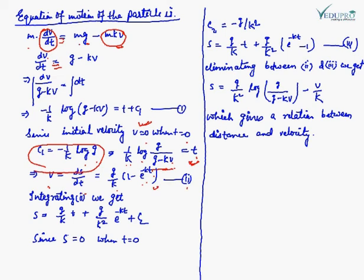Integrating dS = V dt gives S = (G/K)T + (G/K²) e^(−KT) + C2. Applying initial conditions T = 0 and S = 0, we find C2 = −G/K². Substituting C2 back into the equation gives S = (G/K)T + (G/K²) e^(−KT) − (G/K²), which is equation four.